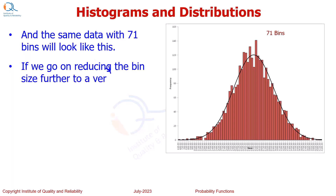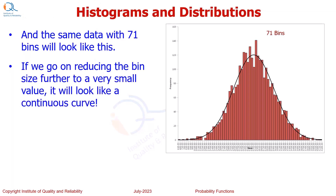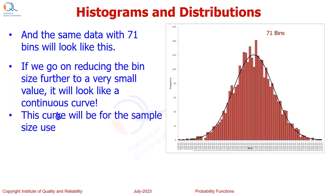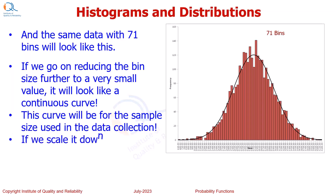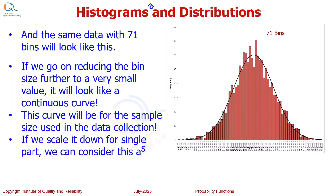If we go on reducing the bin size further to an infinitesimally small value, it will look like a continuous curve. This curve will be for the sample size used in data collection. If we scale it down for a single item or single part, we can consider this as a probability density function, PDF. Let us now understand the mathematics of PDF.